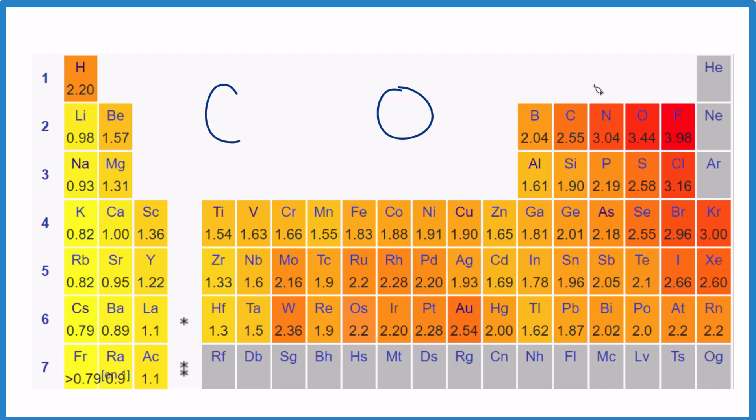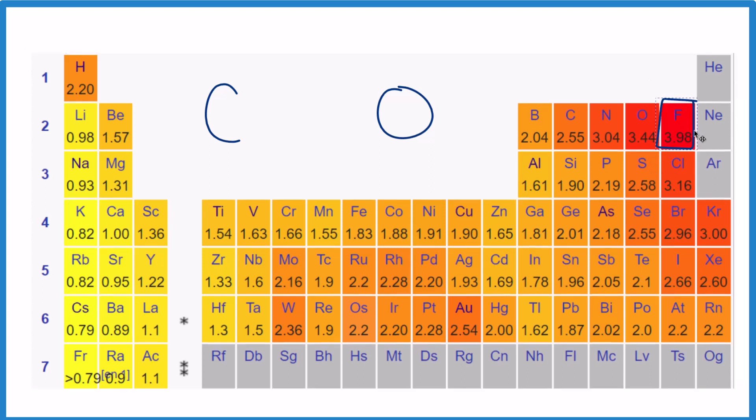On a periodic table, find fluorine. And whichever element is closer to fluorine, that's going to have the higher value for electronegativity.